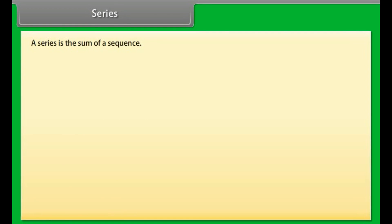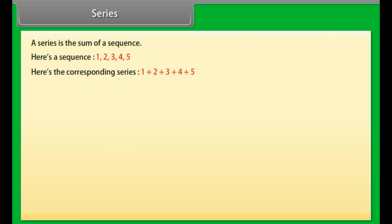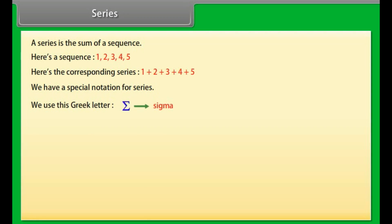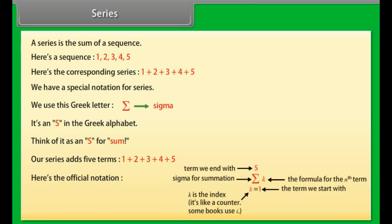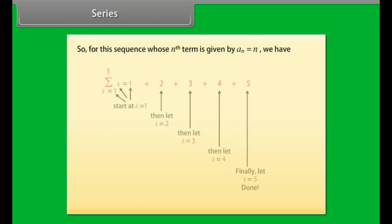A series is the sum of a sequence. Here is a sequence: 1, 2, 3, 4, 5. Here is the corresponding series: 1 + 2 + 3 + 4 + 5. We have a special notation for series — we use the Greek letter sigma, which is an S in the Greek alphabet. Think of it as an S for sum. Our series adds 5 terms. The official notation is: summation from k = 1 to 5 of k. For the sequence whose nth term is a(n) = n, the summation is found to be 15.